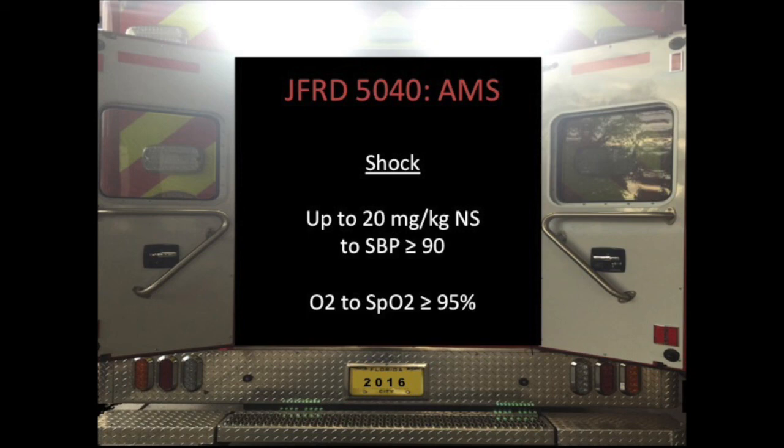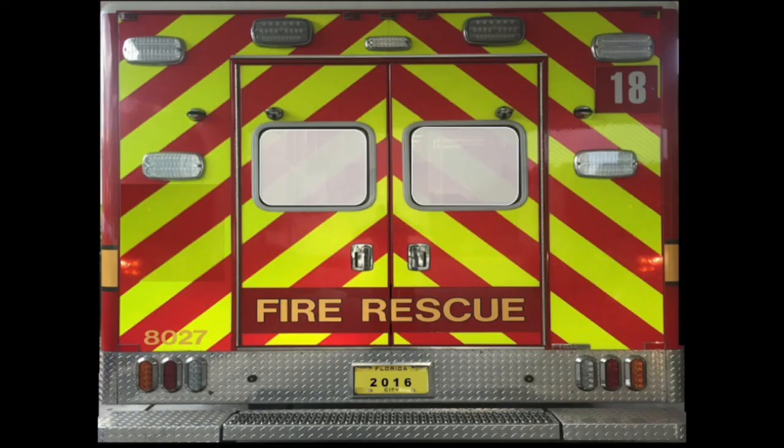For altered mental status due to shock, the types you can treat immediately are hypovolemic shock and hypoxic shock. For hypovolemia, you can give up to 20 mL/kg normal saline to a systolic of 90, and O2 to keep oxygen above 95%. Those are the things you can treat and diagnose: your overdose, your hypoglycemia, and your hypoxia or hypovolemia leading to shock.